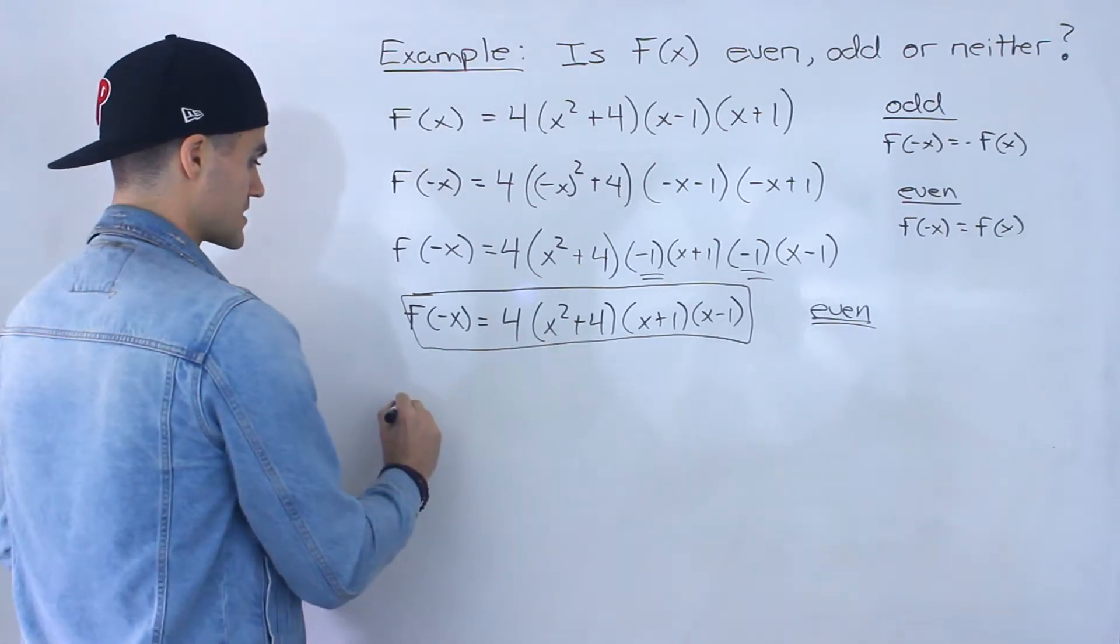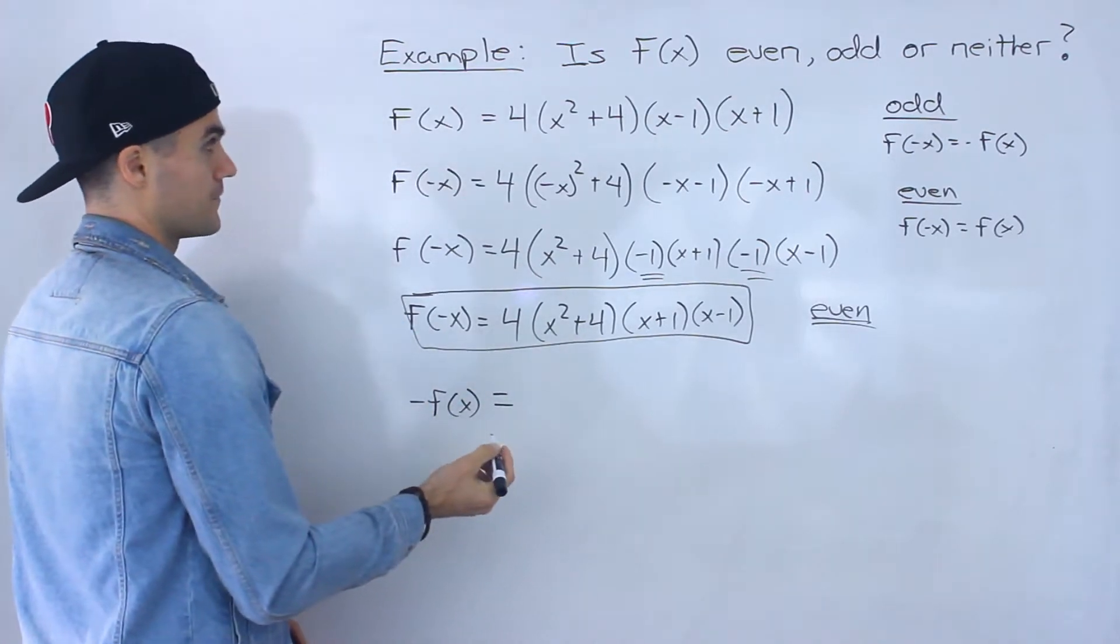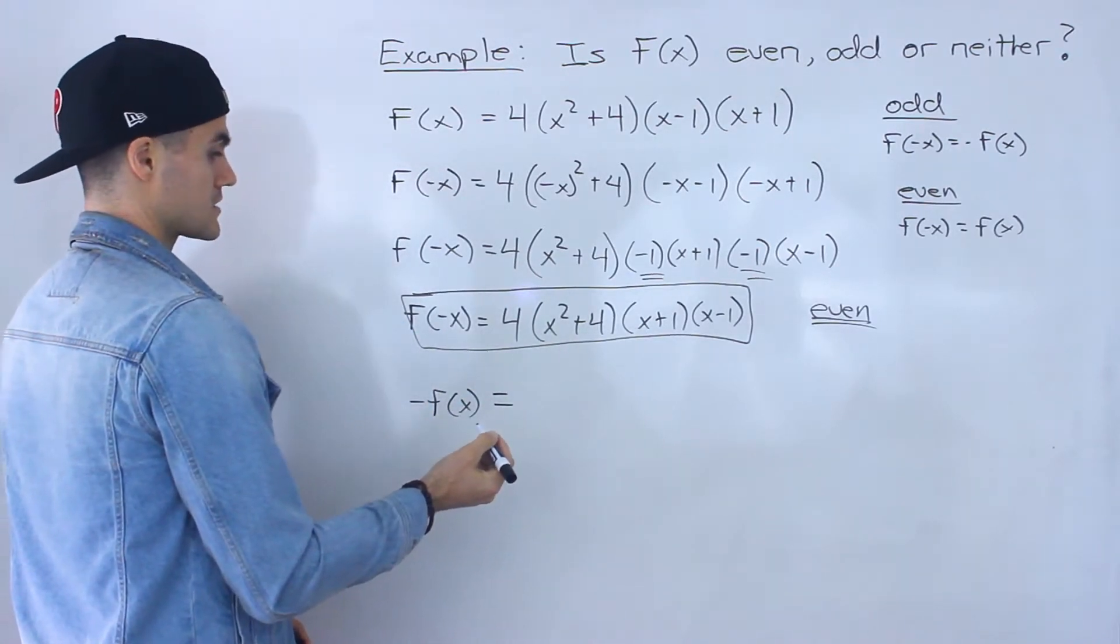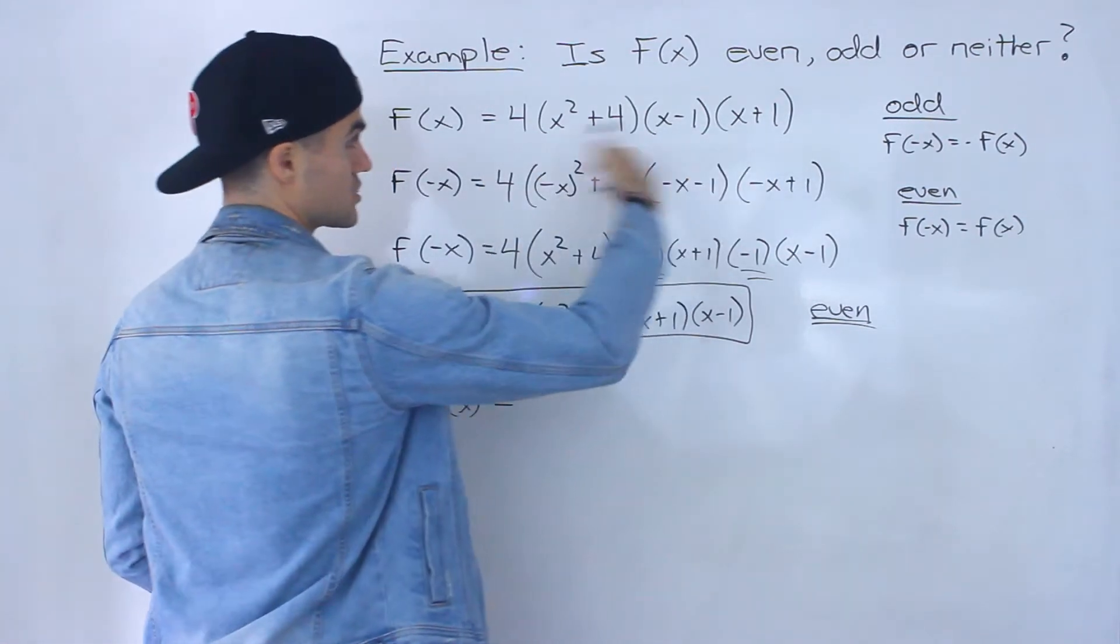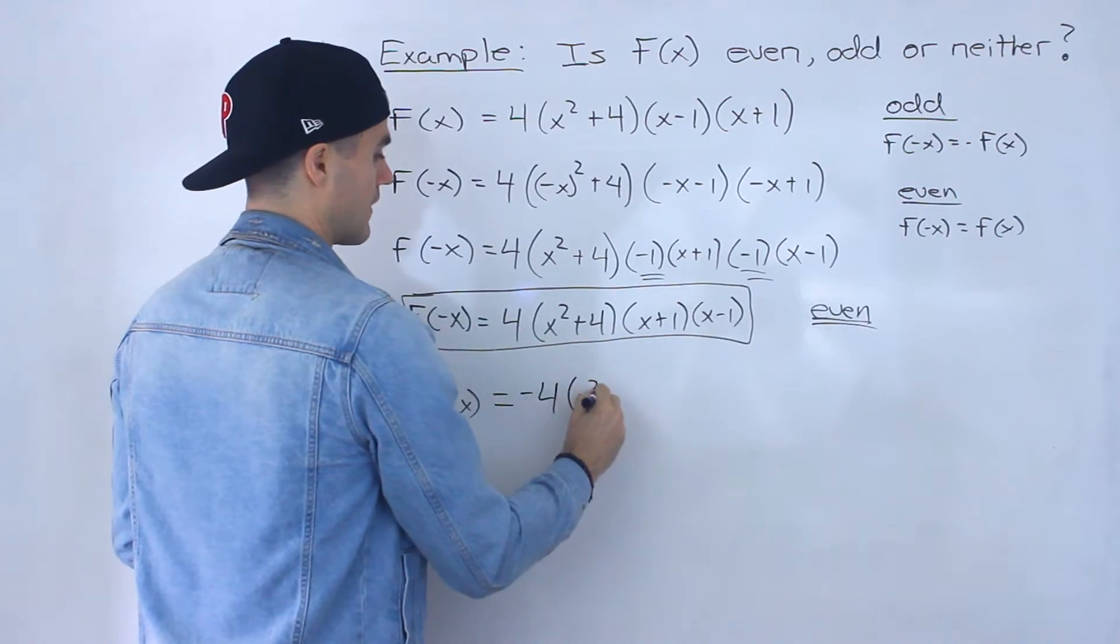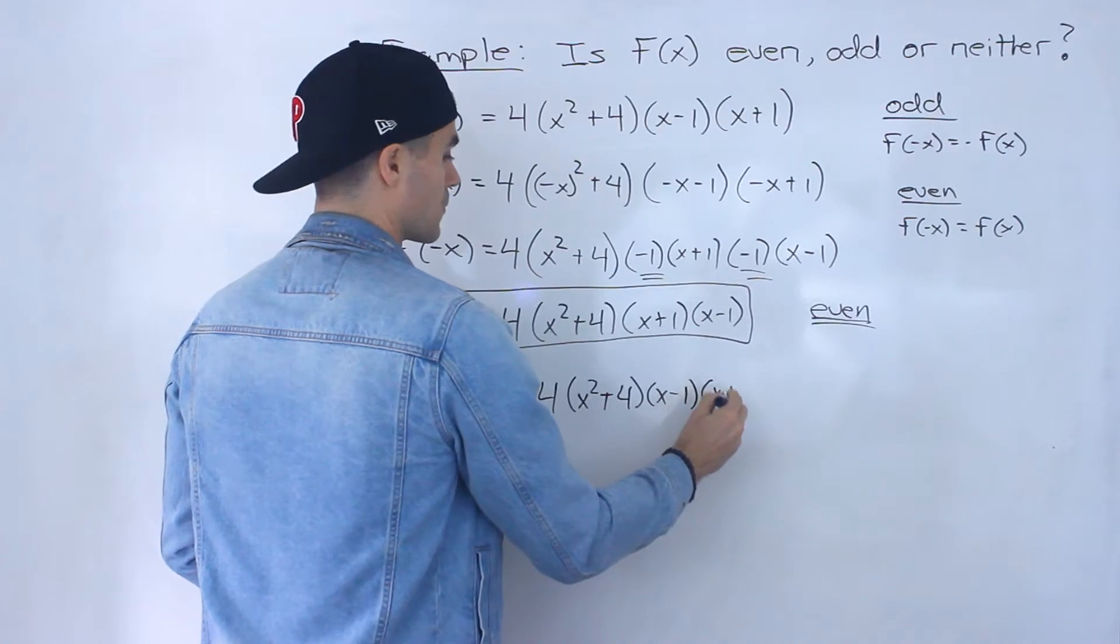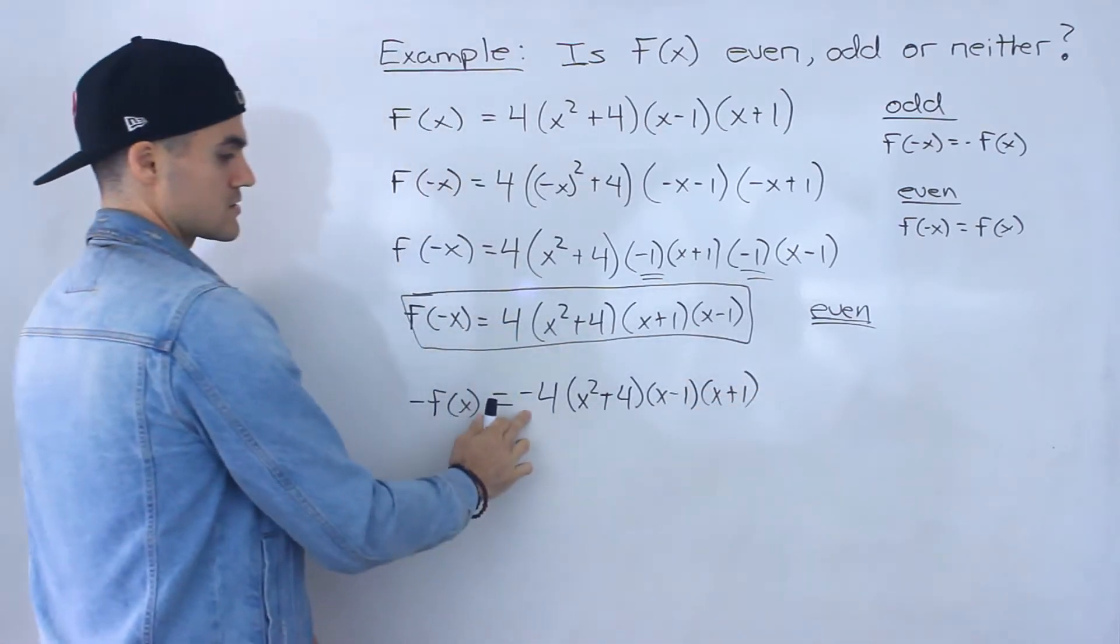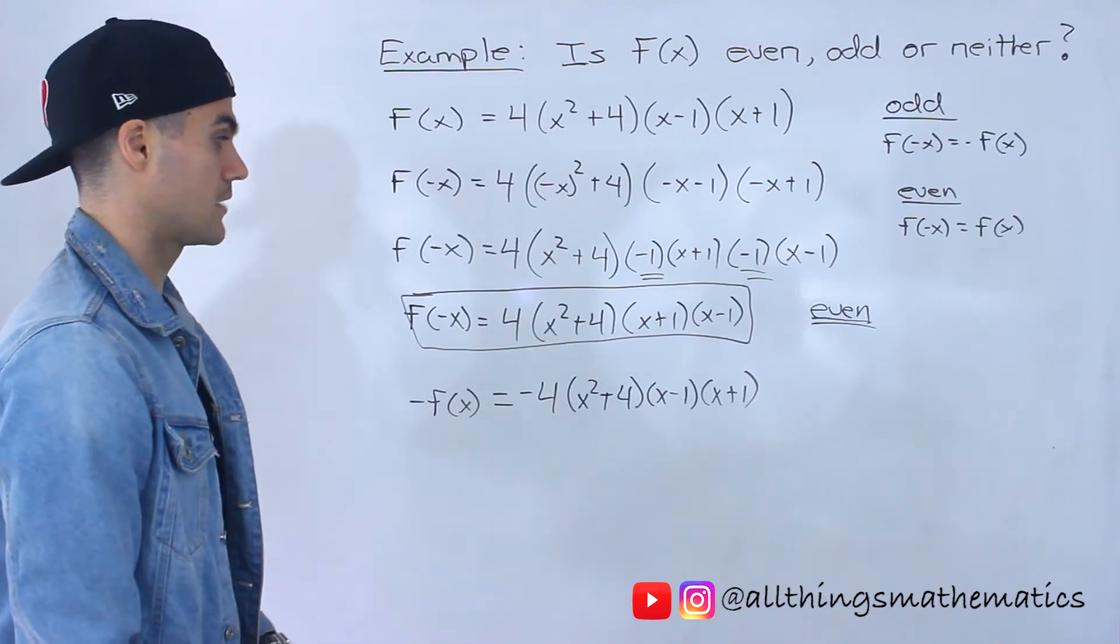But if we want to take it a step further and show an expression for negative f of x, what would happen here is we would just put a negative in front. Right? We would take this function, just multiply it by negative 1. So this would become a negative 4, and then all the other factors stay the same. Remember we don't distribute that negative 1 to the other factors because we're multiplying everything.